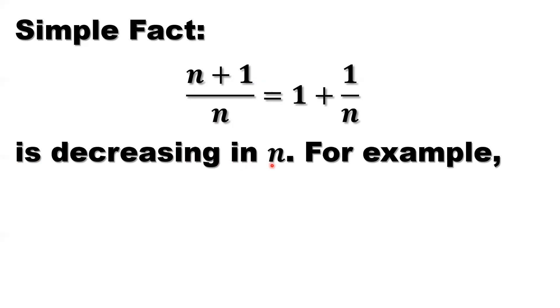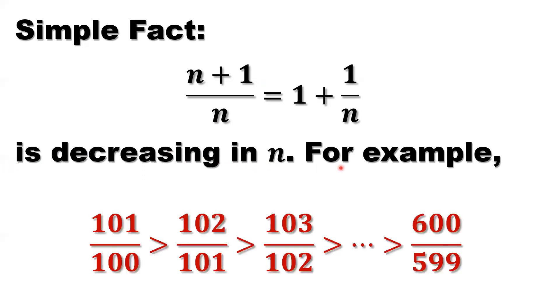For example, 101 over 100, two numbers are consecutive. Both numerator and denominator increase by 1. You can see the two consecutive numbers, 102 over 101, because that's decreasing, so this is decreasing. Both numerator and denominator plus 1 again, that's decreasing, decreasing, decreasing. So the last item, that's 600 over 599, the difference is 1. So the two consecutive numbers. We will use this to derive our result.